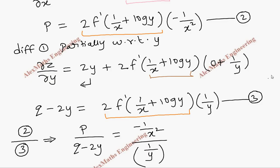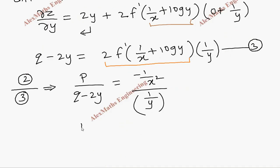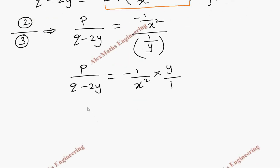Since it is a fraction, we can take a reciprocal. So p/(q - 2y) = (-1/x²) × (y/1). So we got p/(q - 2y) = -y/x².